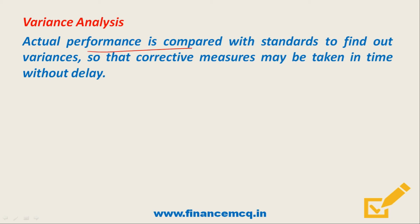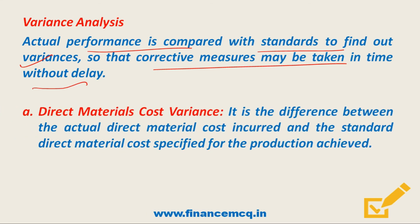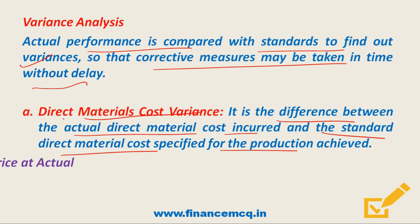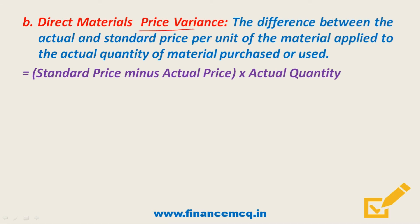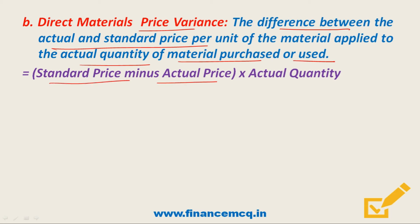Next we will see variance analysis. Actual performance is compared with standards to find out variances so that corrective measures may be taken in time. The first type is Material Cost Variance, which is the difference between actual direct material cost incurred and the standard direct material cost specified for the production achieved. The formula is: (Standard Price × Standard Quantity) minus (Actual Price × Actual Quantity). The next type is Direct Material Price Variance, which is the difference between the actual and standard price per unit of material, applied to the actual quantity purchased or used. Formula: (Standard Price minus Actual Price) × Actual Quantity.